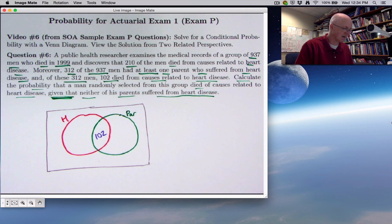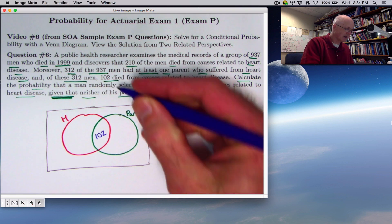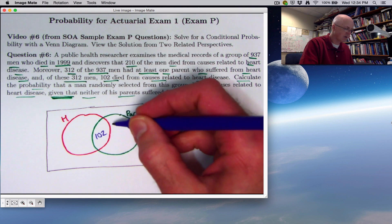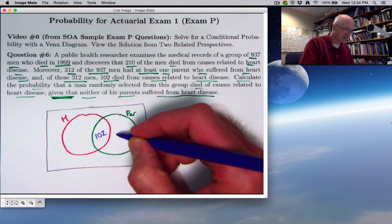Okay, those would be the men that both died from causes related to heart disease and had a genetic link. Once you know that number, you can fill in these other numbers. It's 312 men in here total. So in this crescent shape, it would be 312 minus 102, that would be 210. Those would be the men that had a genetic link but died from something other than causes related to heart disease.